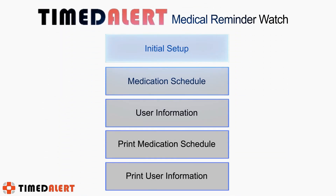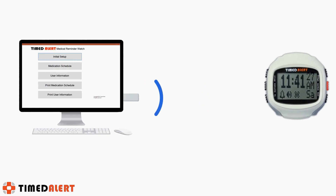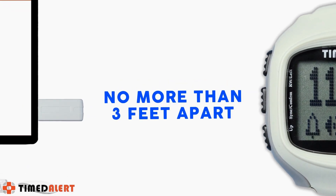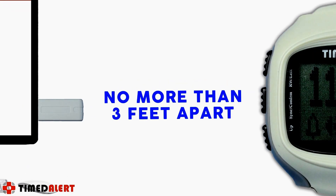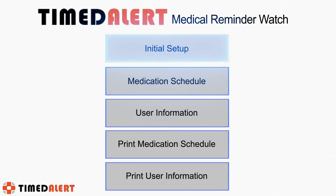Once the application is downloaded and installed, you need to first program the initial settings of the watch. To do this, insert the radio frequency dongle into the USB port of your computer, and remember to keep the watch within three feet of the dongle at all times in order for the connection to be received. Thereafter, open the Timed Alert software and enter the initial setup screen from the main menu.